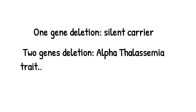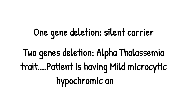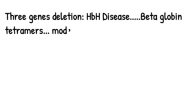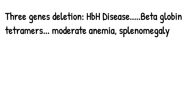One gene deletion: silent carrier — no problems. Two gene deletion: alpha thalassemia trait — the patient has mild microcytic hypochromic anemia; no treatment is needed from a clinical standpoint. If three genes are deleted, we move to the next category.